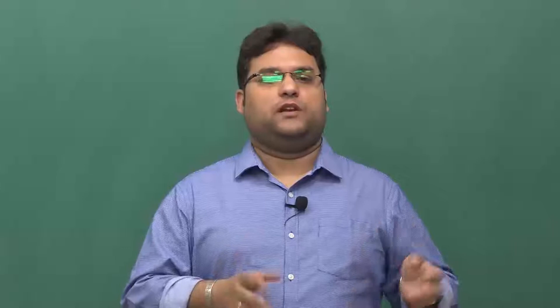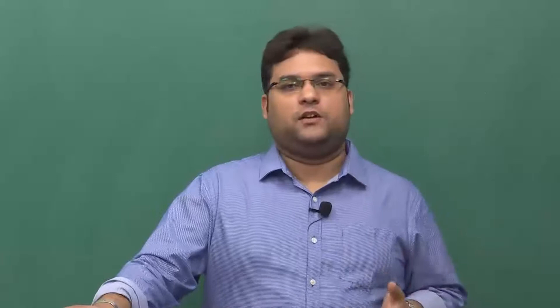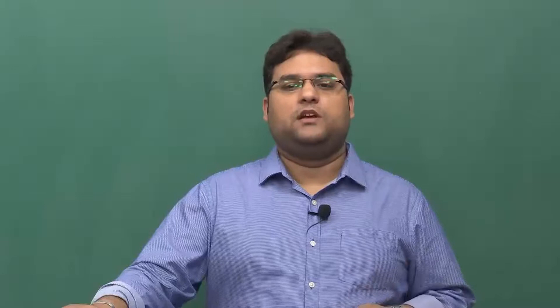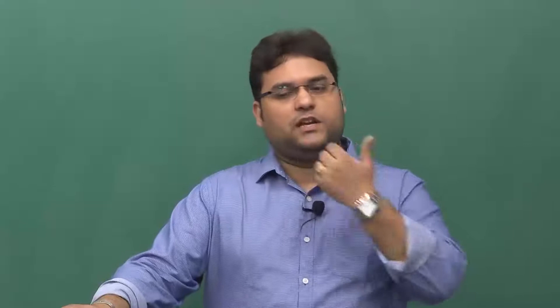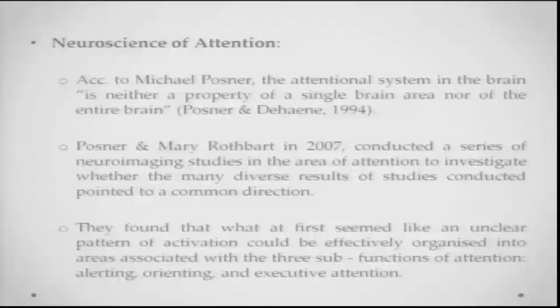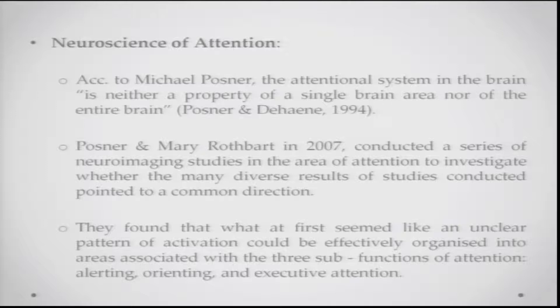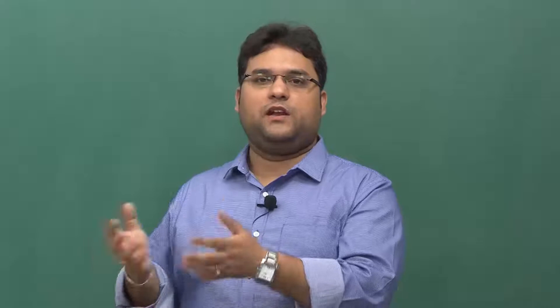Let us talk about the brain and what it has to do with attention. Michael Posner, a very important figure in attentional research and cognitive psychology, basically said that the attentional system in the brain is neither the property of a single brain area nor the property of the entire brain. Posner and Mary Rothbart in 2007 conducted a series of neuroimaging studies in the area of attention to investigate whether the many diverse results of previous studies pointed to a common direction — trying to integrate findings from two or three decades of attention research.